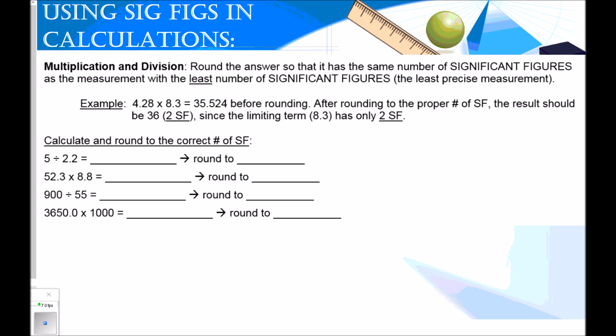For example, if we have 4.28 times 8.3, we exactly get 35.524 before rounding. But 4.28 has three sig figs and 8.3 has two sig figs. So my final answer needs to have two total significant figures. 35 is significant. I look behind it and it's .5, which is going to round this up to 36. So my final answer after rounding should be 36.